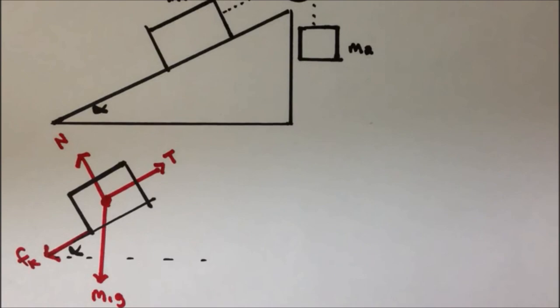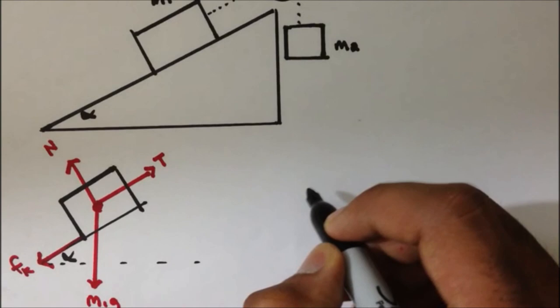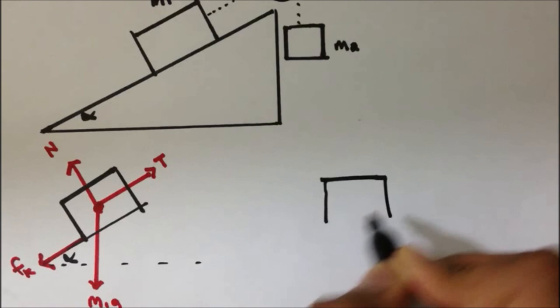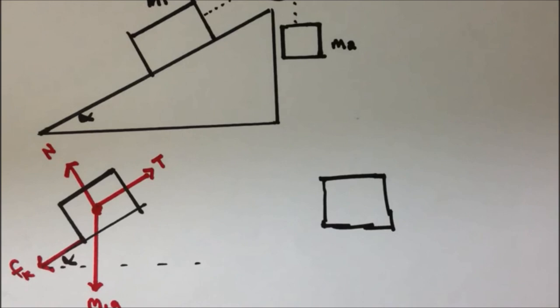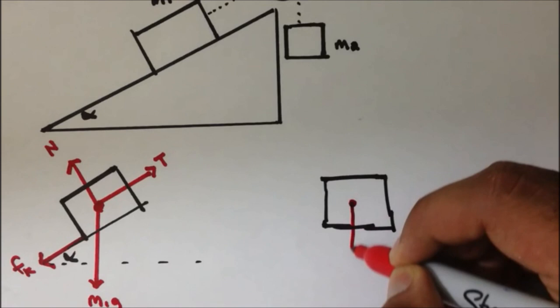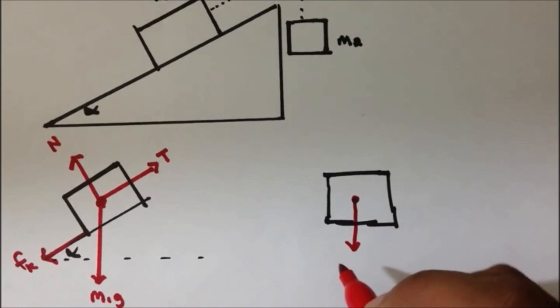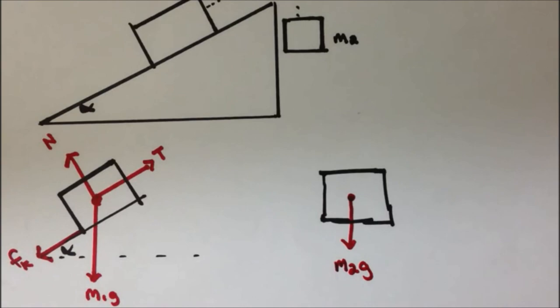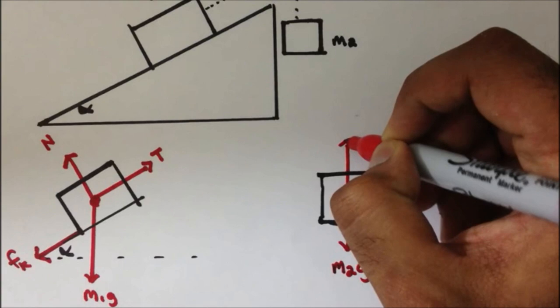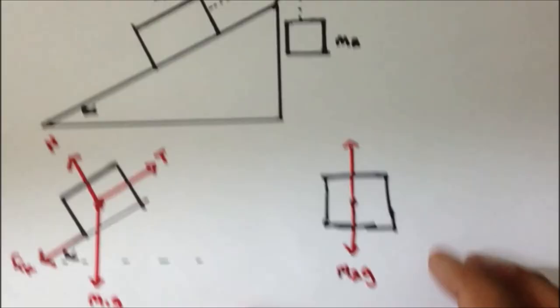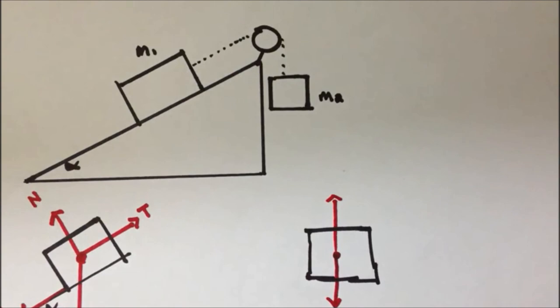Let's draw the second block right here — mass M2. Mass M2 has a component of force going down from its center of mass toward the center of the earth, directed downward. This is the mass times the acceleration due to gravity, which gives us the weight. We also have this tension. Because there is no friction in the pulley, the tension here and for M1 will be the same tension T.